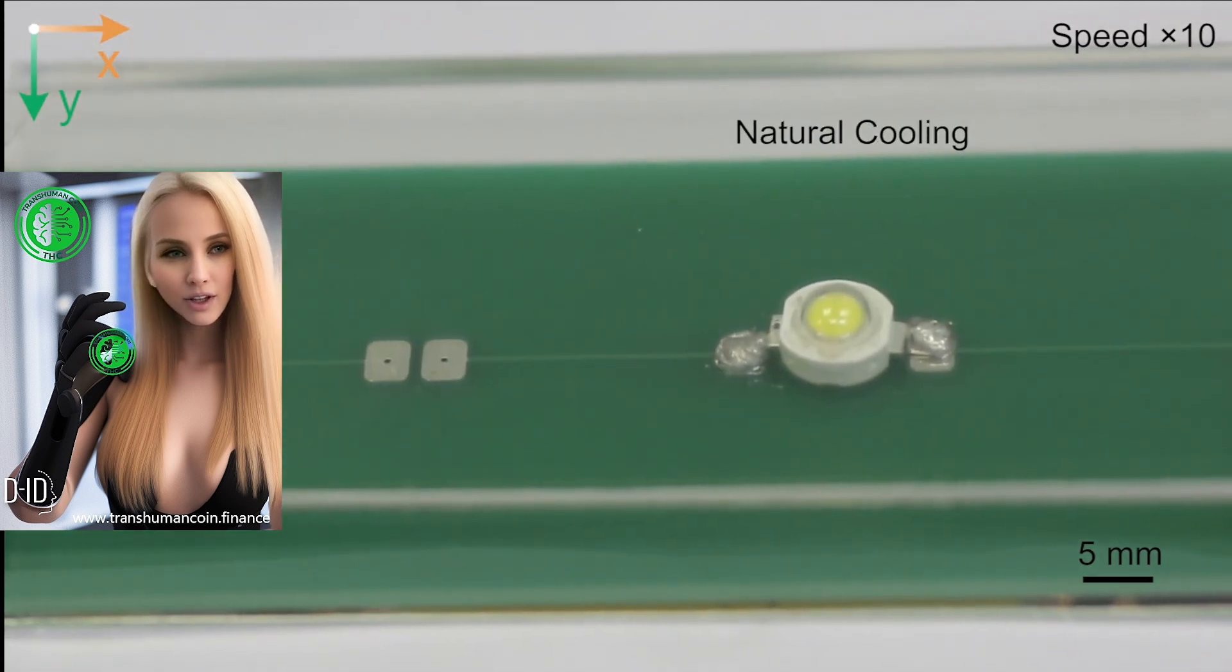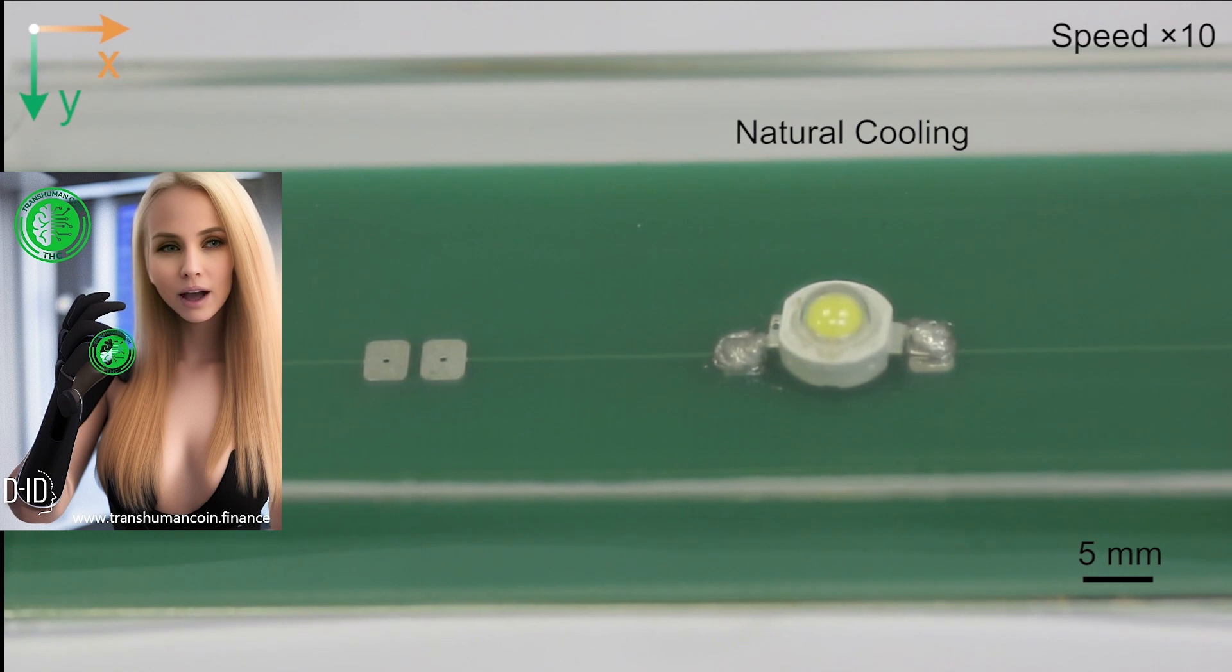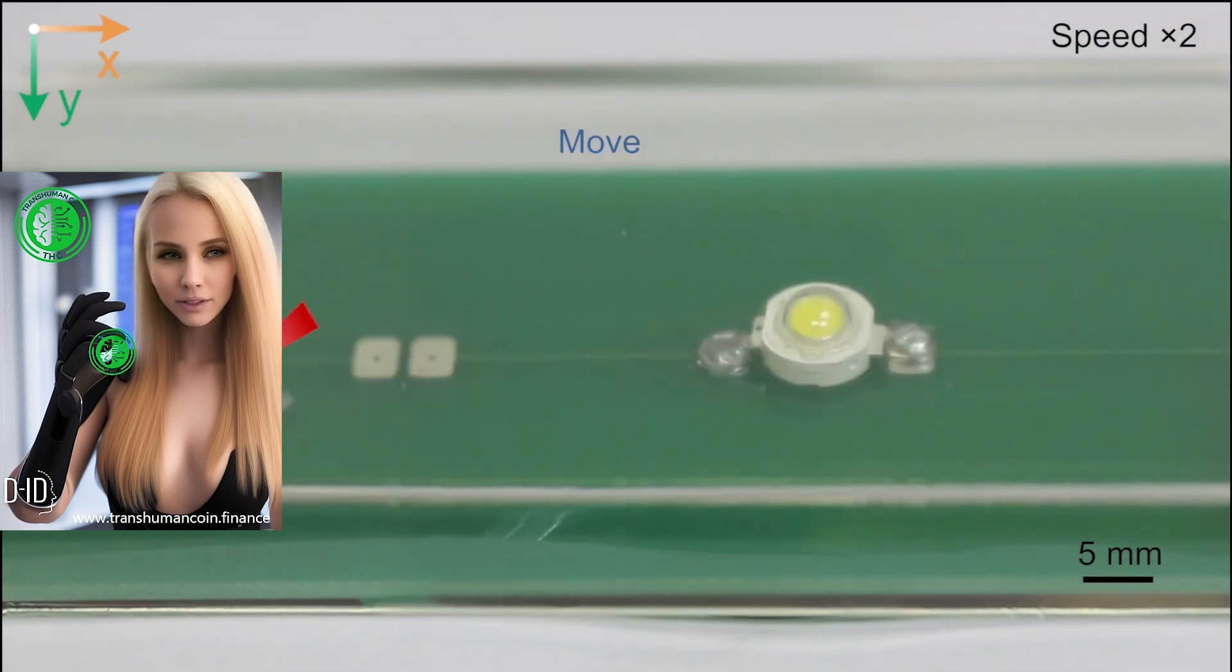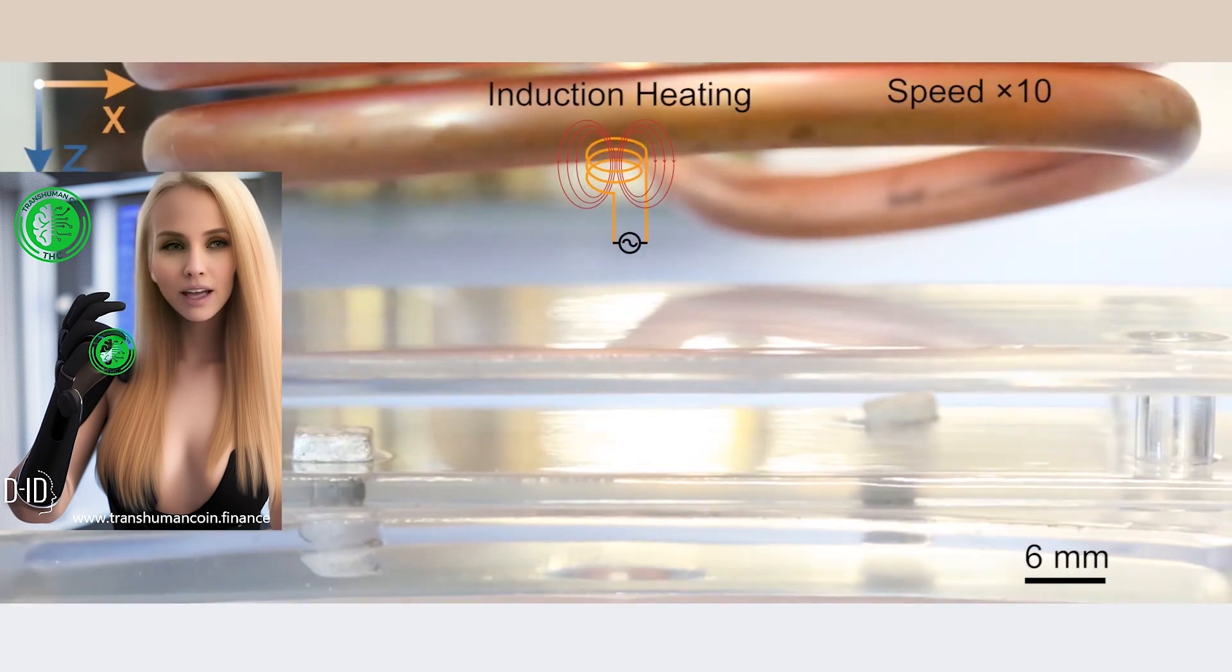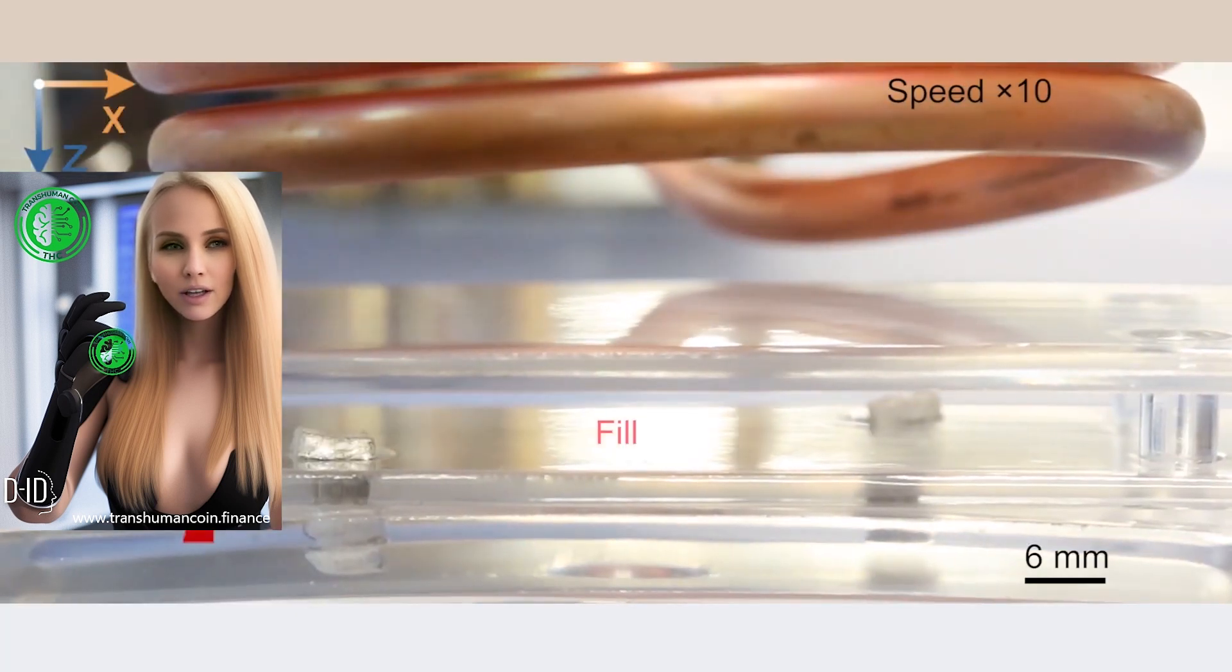The researchers were inspired to create the device based on observations of sea cucumbers, which they noticed were able to alternate between soft and stiff states to protect themselves and increase the amount of weight they could carry.